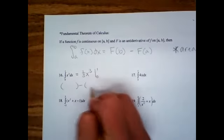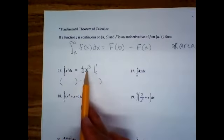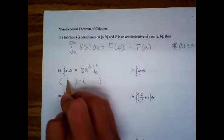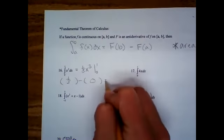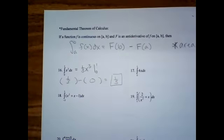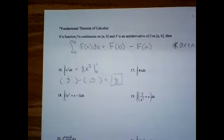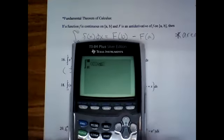So now we're going to do upper boundary minus lower boundary. If you plug in one, you get one-third. If you plug in zero, you get zero. So one-third minus zero is one-third. If you look back at your notes from last class, that was the very first problem we did with all the Riemann sums. And you can check it in the calculator: Math 9, zero to 1, x squared, dx — one-third.